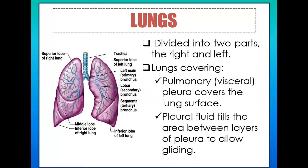The lungs are protected by a covering known as the pulmonary pleura, which secretes pleural fluid to lessen friction when the lungs expand during respiration. Inside the lungs, we can see branch-like structures called bronchioles, and at the end of the bronchioles are the alveoli — the site for gaseous exchange. This confirms that the lungs are indeed the major organ for respiration.